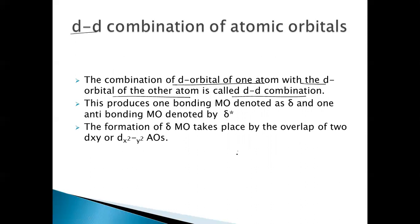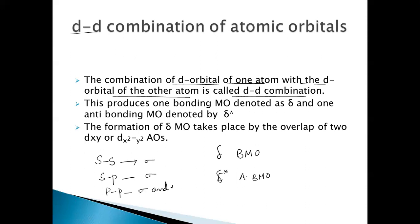The DD combination produces a bonding molecular orbital and an antibonding molecular orbital, but here we represent them as delta and delta star — not sigma or pi. To recap: SS combination results in sigma; SP combination also results in sigma; PP combination results in sigma when lobes are along the internuclear axis and pi when perpendicular; PD combination results in pi; and DD combination results in delta and delta star.